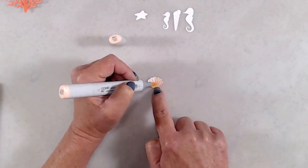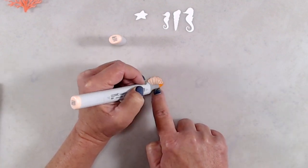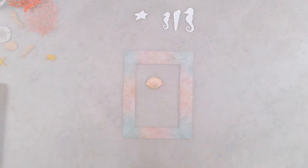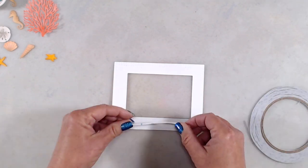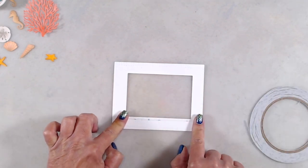I'll be sure to have all of the Copics that I used, as well as all of the products that I used, listed down in the description box below for you. Anyway, moving right along, once I had all of my die cut pieces colored up, it was time to start putting my card together.